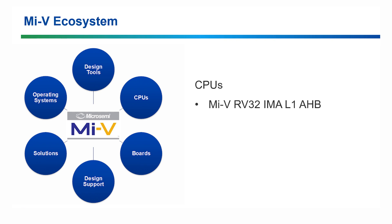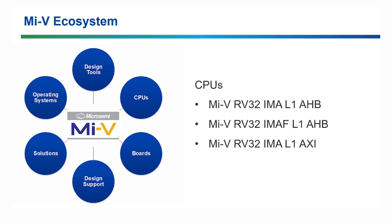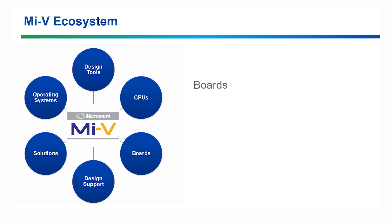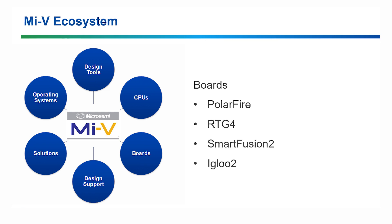Under CPUs we have all of the variants of the Mi5: the ORV32 IMA, IMAF and IMA AXI versions. Under boards we have all of the devices that the Mi5 will run on: the Polar Fire devices, RTG4, Smart Fusion 2 and Igloo 2.